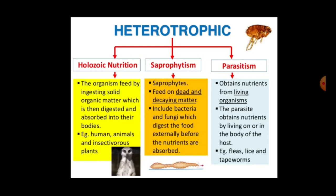Next is saprophytic nutrition. In saprophytic nutrition, organisms feed on dead and decaying matter. Bacteria and fungi digest the food externally before nutrients are absorbed into their body. The next one is parasitism, or parasitic type of nutrition. Organisms obtain nutrients from a living organism — the parasite lives on or inside the body of the host. The best examples of parasitic nutrition are fleas, leeches, and tapeworms.